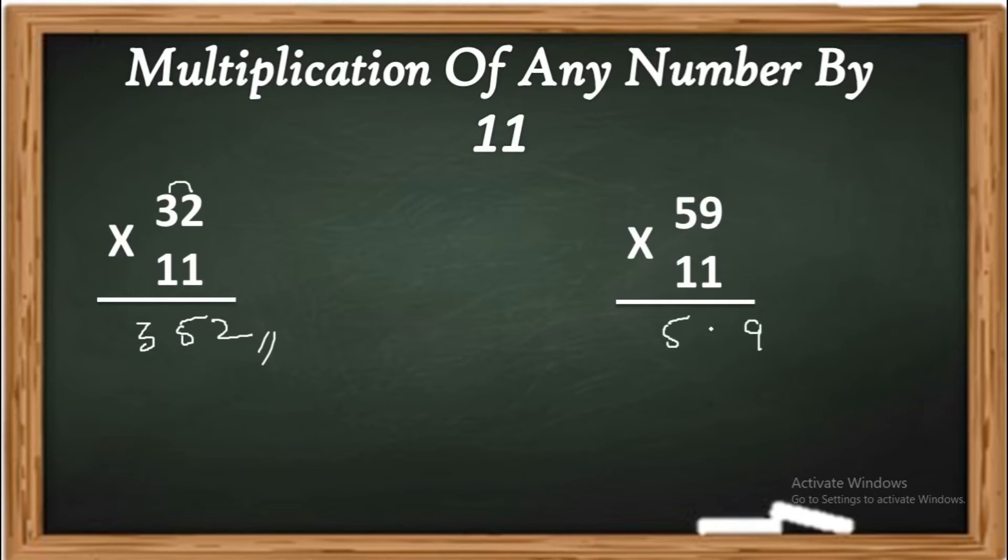I can't write 1 digit, there are 2 digits, and write like this 14. Add them: 9 as it is 4, 5 plus 1 is 6, and the final answer is 649. 59 into 11 is 649.